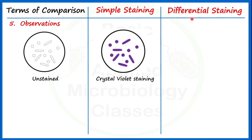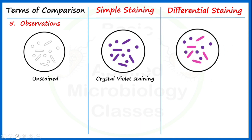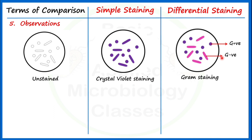For differential staining observations, consider gram staining: after performing gram staining on the same culture, we can identify gram positive and gram negative bacteria. Gram positive bacteria are stained by crystal violet and appear purple or violet in color. Gram negative bacteria take the color of the counterstain, safranin. On the basis of these different colors, we can differentiate between these two groups, making gram staining an excellent example of differential staining.